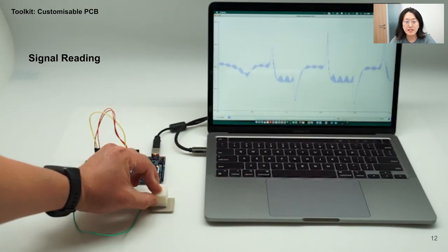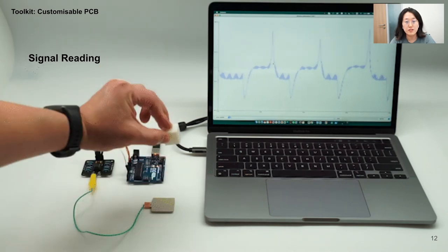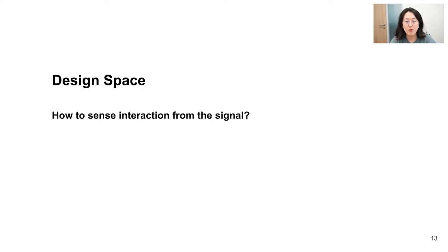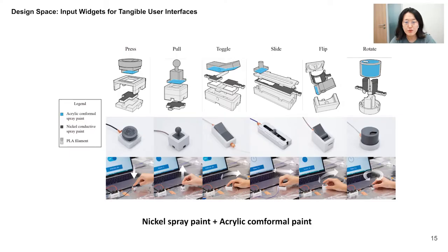Here are the clear and obvious signals read through our toolkit. We also provided four design examples to sense interaction signals. We developed six basic interactive widgets with different input gestures. User inputs cause the conductive and dielectric coatings to contact and separate, and information such as time, count, and distance is computed by the microcontroller.